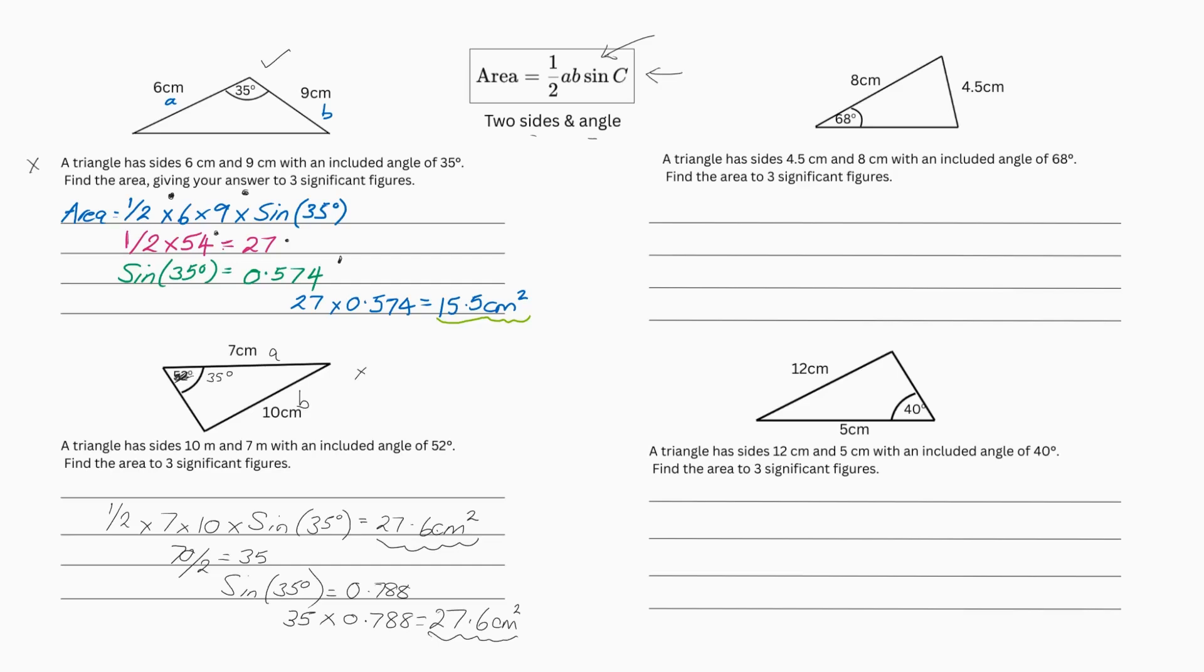Next one, we've got 8 centimeters, 4.5 and 68. Call it A and B or you could do it either way around. It doesn't matter. So we've got a half times 8 times 6 times sin. And our angle, which is 68 degrees.